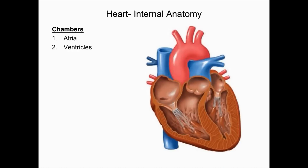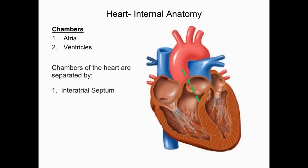One of the functions of the heart is to separate oxygen-poor blood from oxygen-rich blood, which means there must be a wall between the two atria and a wall between the two ventricles. The chambers of the heart are separated by a septum — a wall of myocardium. Between the two atria is the intra-atrial septum, and between the two ventricles is the intraventricular septum.